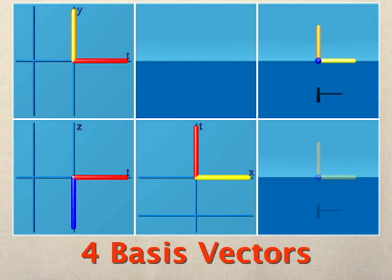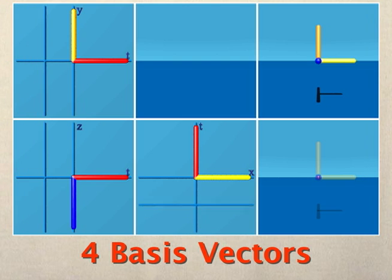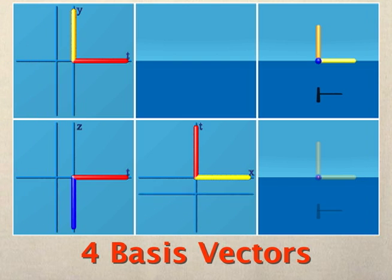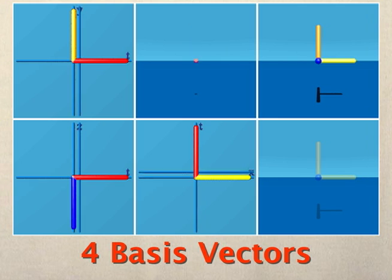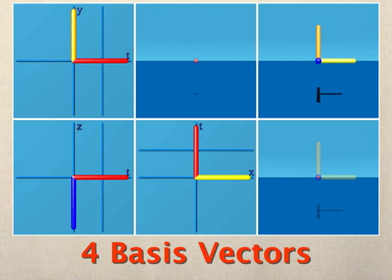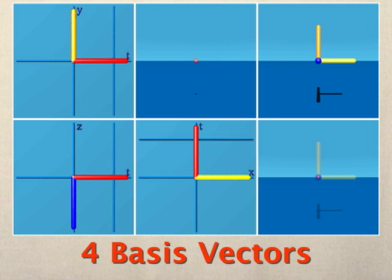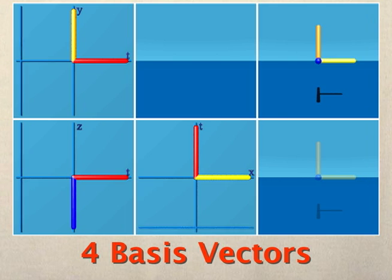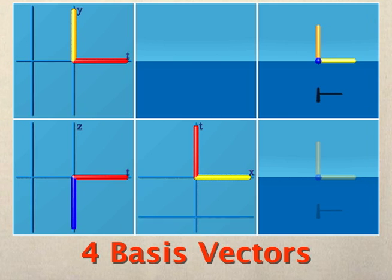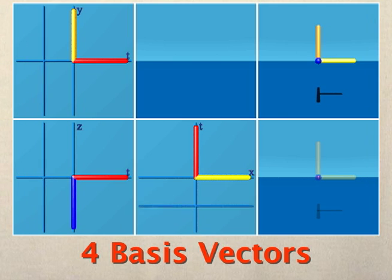Hello, I'm Doug. These are the four basis vectors of space-time. The three space vectors have the blink property — they are on the screen for a moment, then gone.